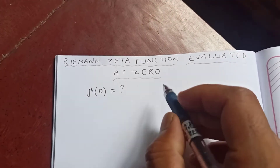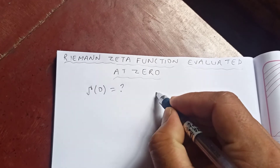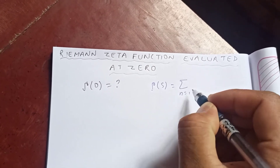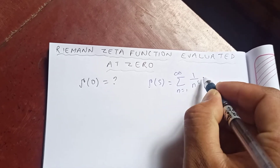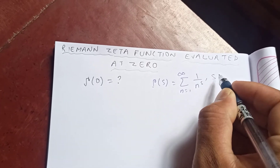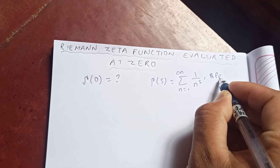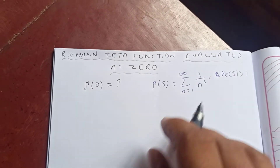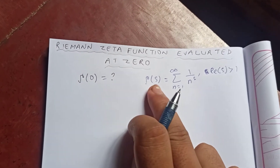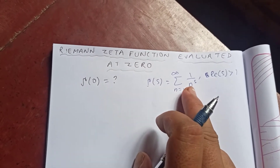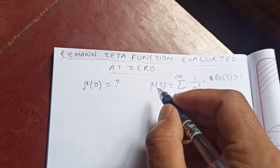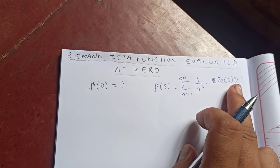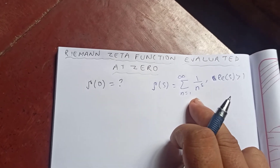First, the definition. The Riemann zeta function is the sum from n equal to one to infinity of one over n to the s, where the real part of s is greater than one. At s equal to one this is a divergent series, so the real part of s must be greater than one.